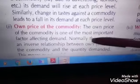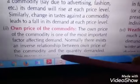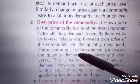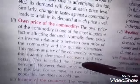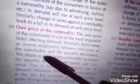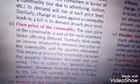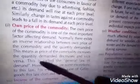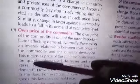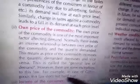The second determinant is the own price of the commodity, which is one of the most important factors affecting demand. Normally, there exists an inverse relationship between the own price of the commodity and the quantity demanded — this is called the general law of demand. When the price of a commodity increases, the quantity demanded decreases, and when the price decreases, the quantity demanded increases. There is an inverse relationship between price and quantity demanded.